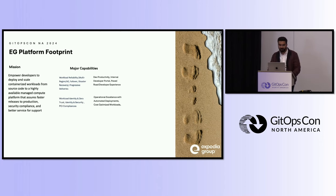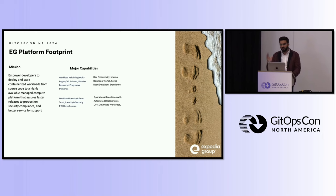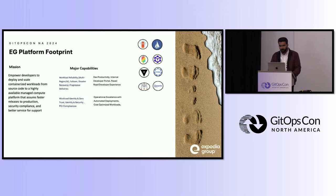This is how the EG platform footprint looks. Our mission was to make a platform which would be abstracted to all developers — they would not need to know the nuances of Kubernetes; they would just deploy and run containerized workloads in a highly available manner in production. We always target that our workload should be reliable, we should have progressive delivery in place, identity and security compliance, automated deployments, and cost-optimized workload management. These are the different open source tools we've been using.